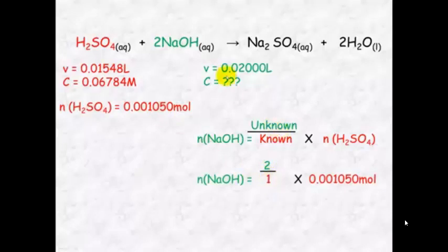So we have got a 2 to 1 ratio. The unknown here is 2 and the known is 1. So 2 over 1 times this equals 0.002100 mole.